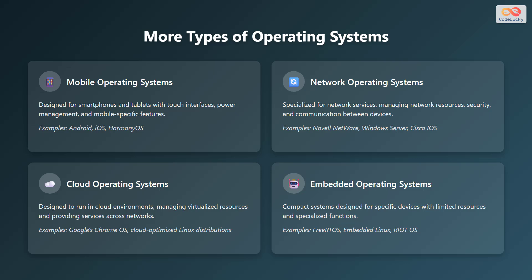Network operating systems are specialized for network services, managing network resources, security, and communication between devices; examples include Novell Netware, Windows Server, and Cisco IOS. Cloud operating systems are designed to run in cloud environments, managing virtualized resources and providing services across networks; examples include Google's Chrome OS and cloud-optimized Linux distributions. Embedded operating systems are compact systems designed for specific devices with limited resources and specialized functions; examples include FreeRTOS, Embedded Linux, and RIOT OS.